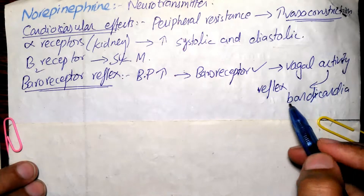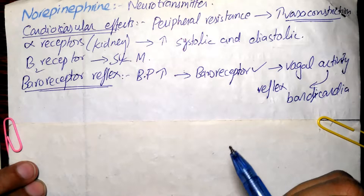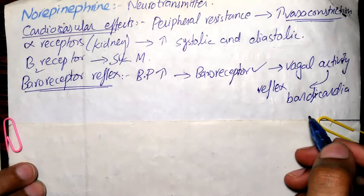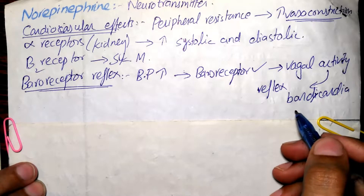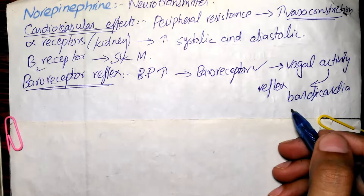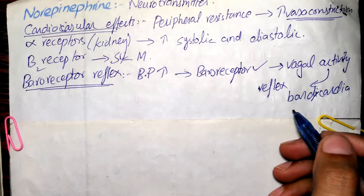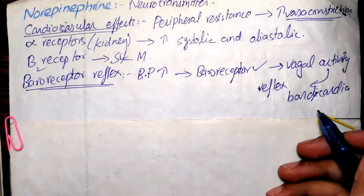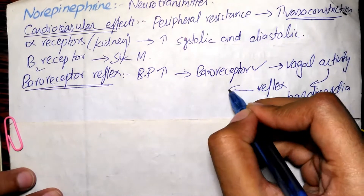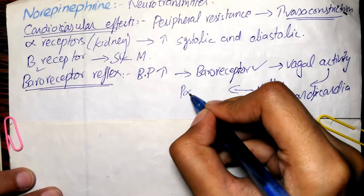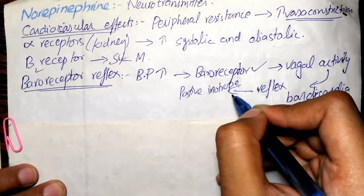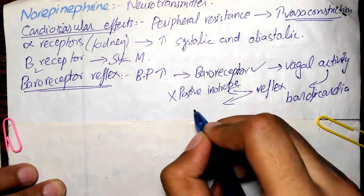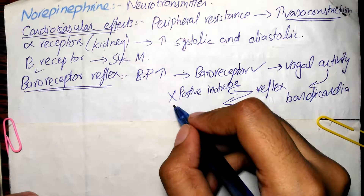This increase in vagal activity produces reflex bradycardia — a decrease in heart rate — which is sufficient to counteract the local action of norepinephrine on the heart. However, this reflex compensation does not affect the positive inotropic effect of the drug, meaning the strengthening of myocardial contractility cannot be decreased by this reflex bradycardia.